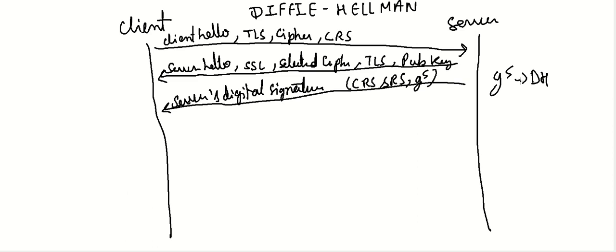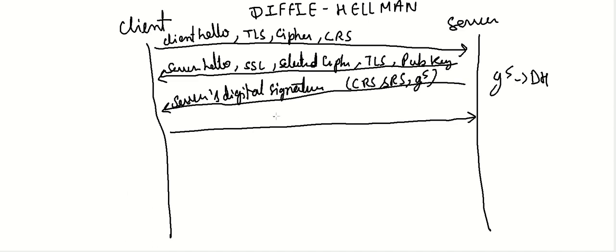The server will have its own DH parameter and the client will have its own DH parameter, and these will be used to calculate the pre-master key. These three things are encrypted using the private key and the client will decrypt it using its public key. After receiving this, the client will also share its DH parameter, that is G to the power C — here we are using C for client and S for server.